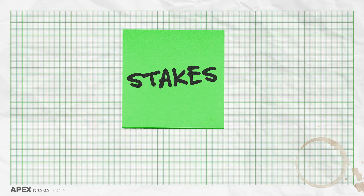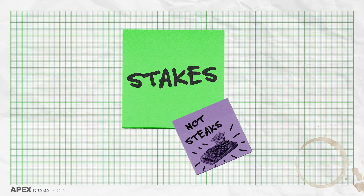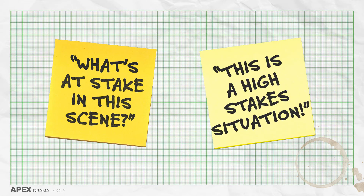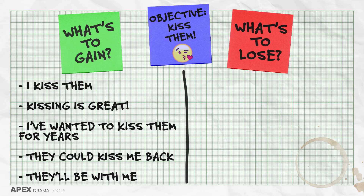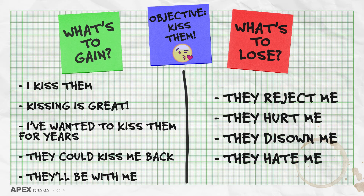Stakes are a crucial idea in acting. You'll often hear phrases like 'what's at stake in this scene' or 'this is a high stakes situation.' Stakes basically mean what's to gain and what's to lose. For example: imagine your character needs to kiss another character because they love them — that's their objective. However, the other character is in a relationship with someone else. What's to gain is a moment of intimacy; perhaps your character has longed for this person for months, years, or decades, and the other character may reciprocate or even leave their partner for you. What's to lose is that they could reject you, hit you, or disown you for making them cheat on their partner.